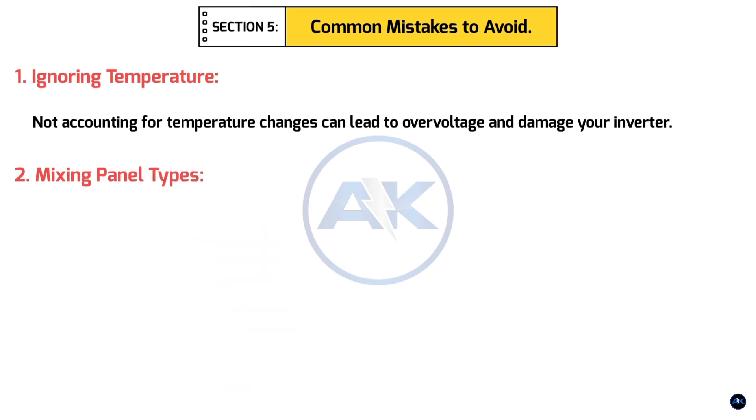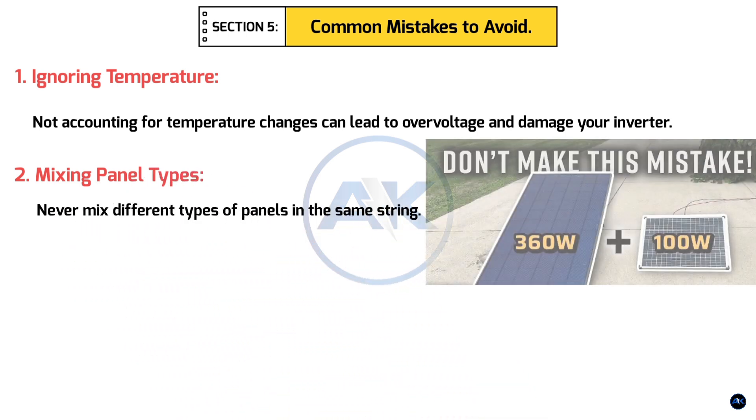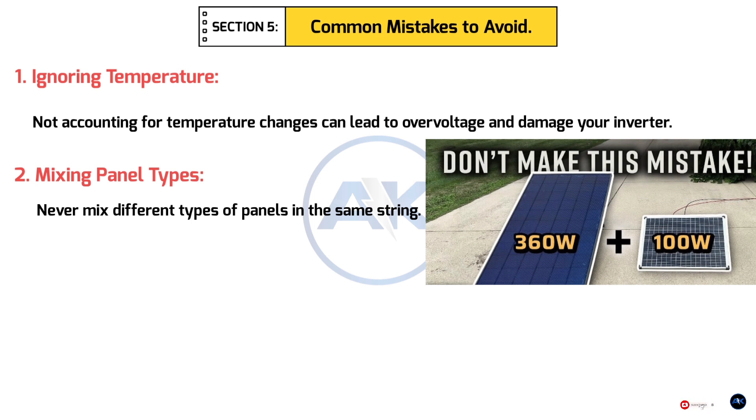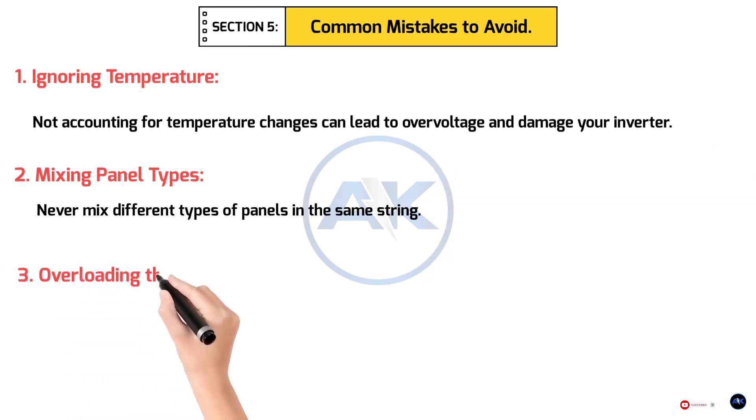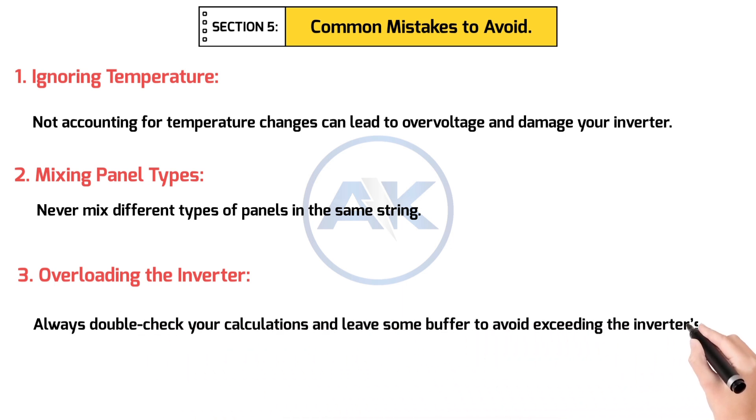2. Mixing Panel Types. Never mix different types of panels in the same string. Their voltages and currents may not match, causing inefficiencies or damage. 3. Overloading the inverter. Always double-check your calculations and leave some buffer to avoid exceeding the inverter's limits.